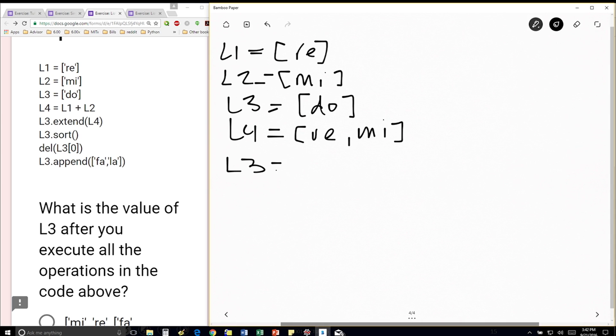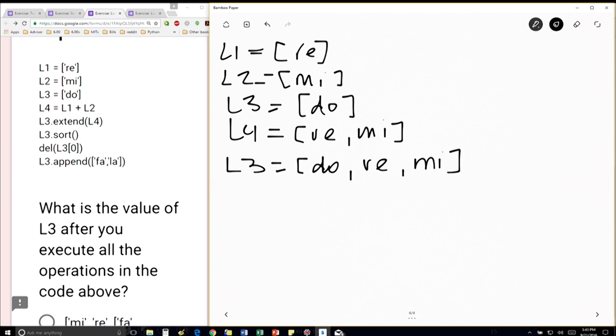Now, extend is going to mutate the list. So that means L3 is going to be extended by whatever L4 is. So L3 is going to be, what did it have originally? It had Doe. And then it's going to be extended by all of the elements inside L4, which is Ray, me, like that. And once I've mutated it, the old version of L3 is gone, right? This is the L3 down here that I'm going to work with.